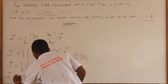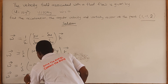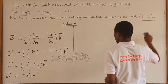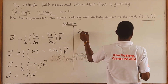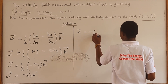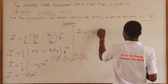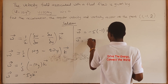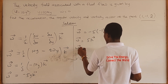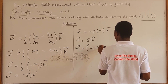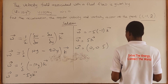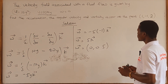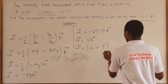This gives us omega = -5y in the k direction. Substituting the point where y = -1: omega = -5 × (-1) = 5 in the k direction. In other words, the angular velocity vector is (0, 0, 5). That is the angular velocity, or rate of rotation.